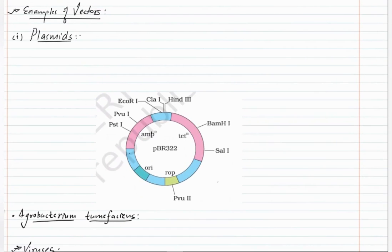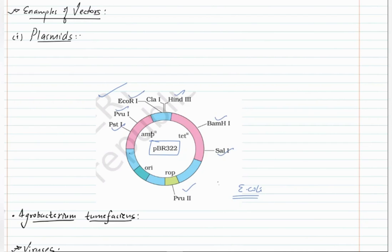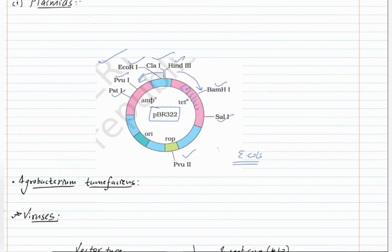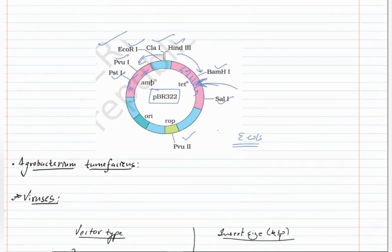PBR-322 is a plasmid of E. coli. Its restriction sites in order are: HIND3, BAMHI, SAL1, PVU2, PST1, PVU1, ECOARI, CLF1 — these must be remembered in order, either clockwise or anticlockwise, as questions may be based on their order. These genes confer antibiotic resistance; inserting recombinant DNA into these sites causes insertional inactivation and the plasmid loses the ability to confer tetracycline resistance.